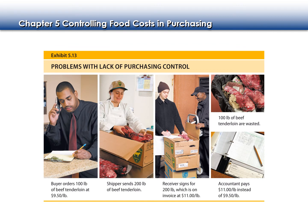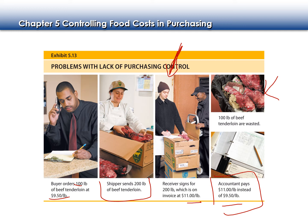It's important that whoever is receiving the order has the purchase order in hand, because they're going to check it against what is actually being delivered. If I order 100 pounds of beef at $9.50 a pound but the shipper sends 200 pounds at $11 a pound, then I have too much and my books are going to be off — I thought I was paying $9.50 but I'm paying an extra $1.50 per pound. That's why the receiver keeps the purchase order on hand to compare the numbers.